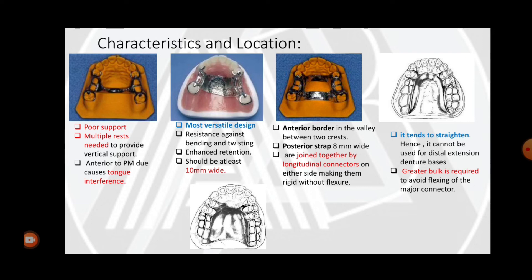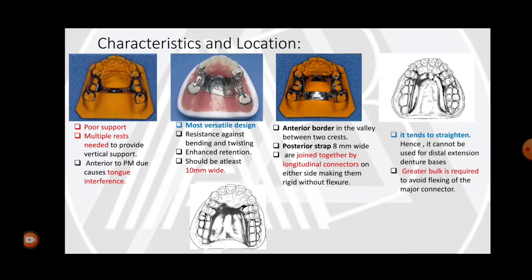The main disadvantage of the U-shaped or horseshoe-shaped connector is that it tends to straighten because it has only an anterior component and no posterior component. Therefore, it cannot be used for distal extension denture bases. To avoid flexure, greater bulk must be added to the major connector — but this causes patient discomfort. So the main disadvantage is its tendency to undergo flexure when occlusal forces are applied.